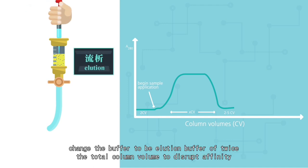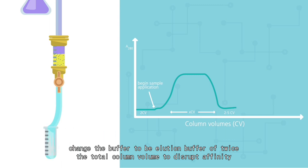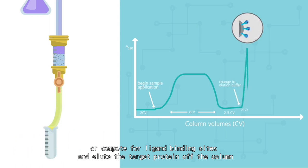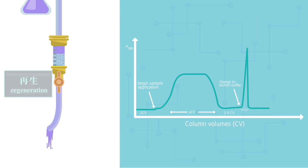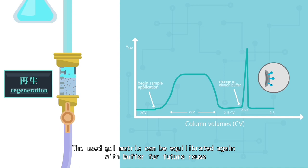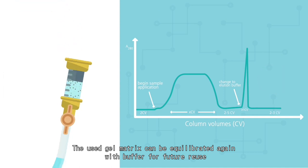Finally, change the buffer to the elution buffer of twice the total column volume to disrupt affinity or compete for ligand binding sites and elute the target protein off the column. The used gel matrix can be equilibrated again with the buffer for future reuse.